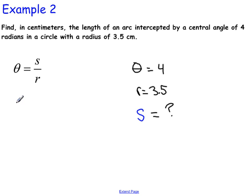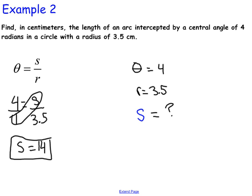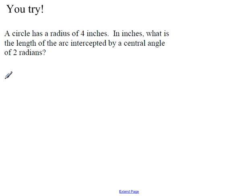Okay, so let's substitute into the formula. So we're going to have 4 equals S over 3.5. Okay, let's put this over 1, cross multiply. S times 1 is S, and then we got 4 times 3.5. That's 14, so the length of the arc is 14 centimeters.